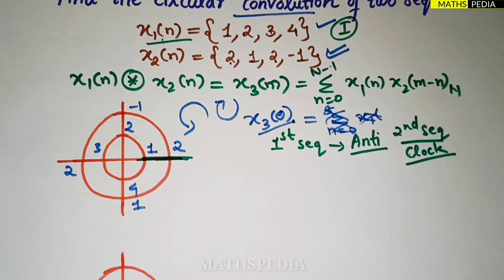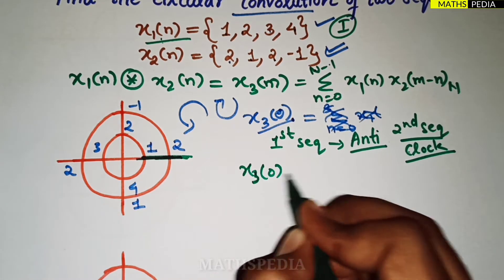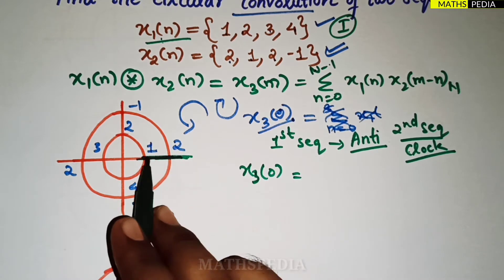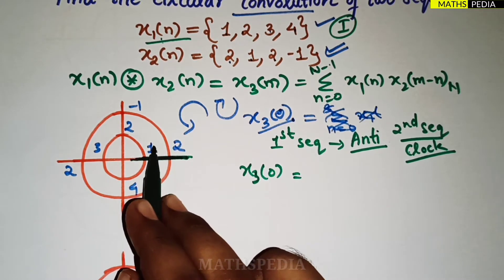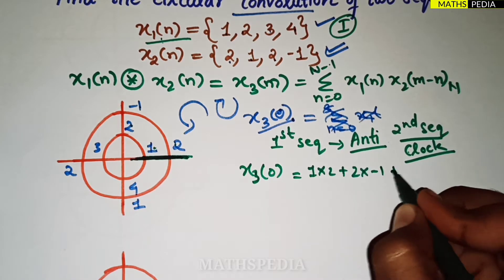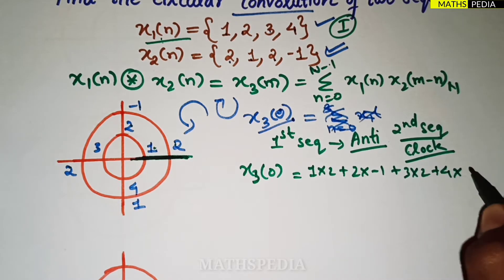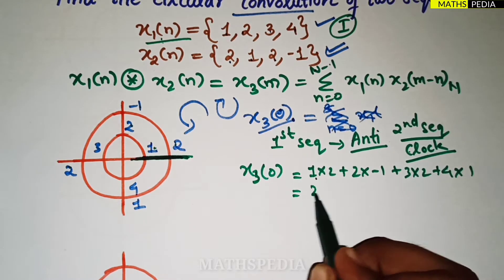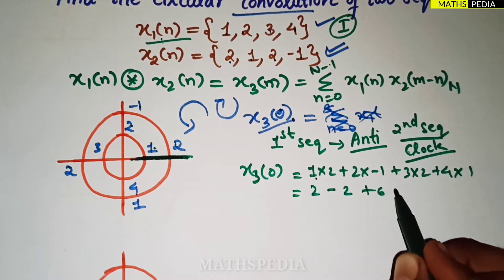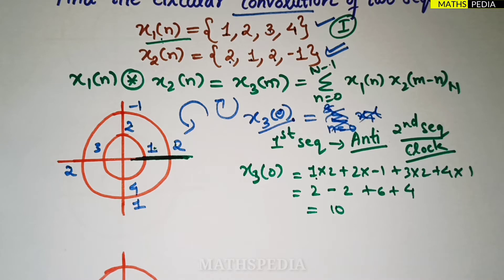Now I can directly write the value of x3(0). Just multiply the corresponding values: 1×2 + 2×(-1) + 3×2 + 4×1 = 2 - 2 + 6 + 4 = 10. So x3(0) = 10.